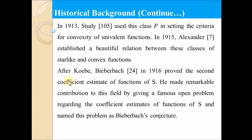In 1930, Study used class P in setting the criteria for convexity of univalent functions. In 1915, Alexander established a beautiful relationship between the classes of star-like and convex functions. This Alexander relation is a basic concept that will be covered in the second lecture along with key definitions.